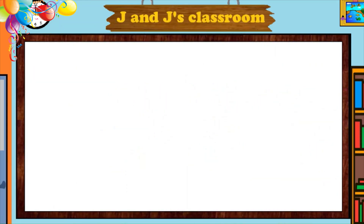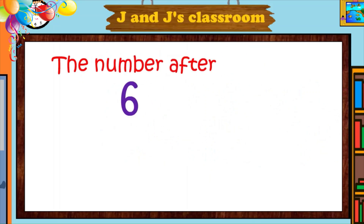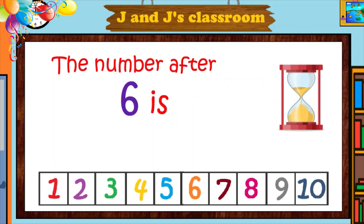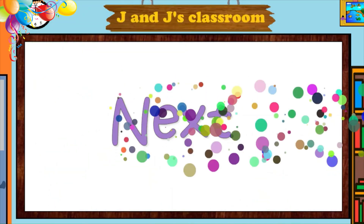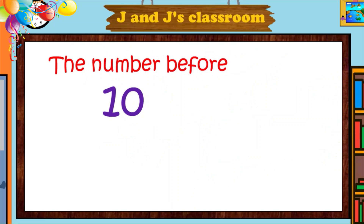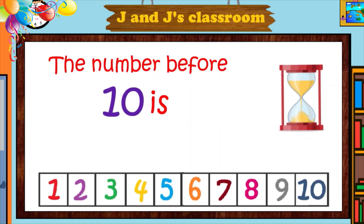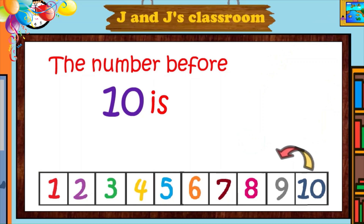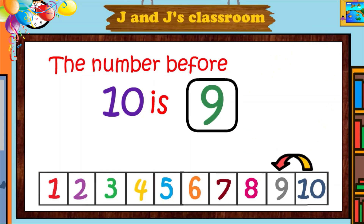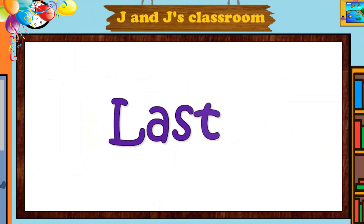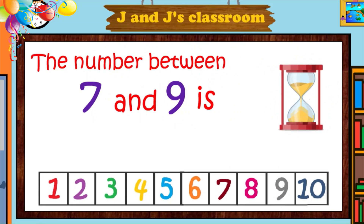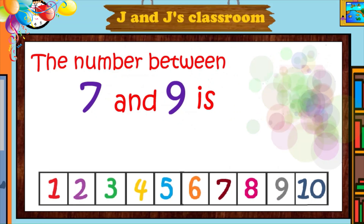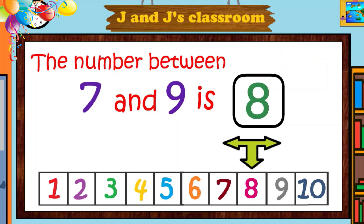Next. The number after six is what? The number after six is seven. Next. The number before ten is what? It's nine. Last question. The number between seven and nine is what? Between seven and nine is eight.